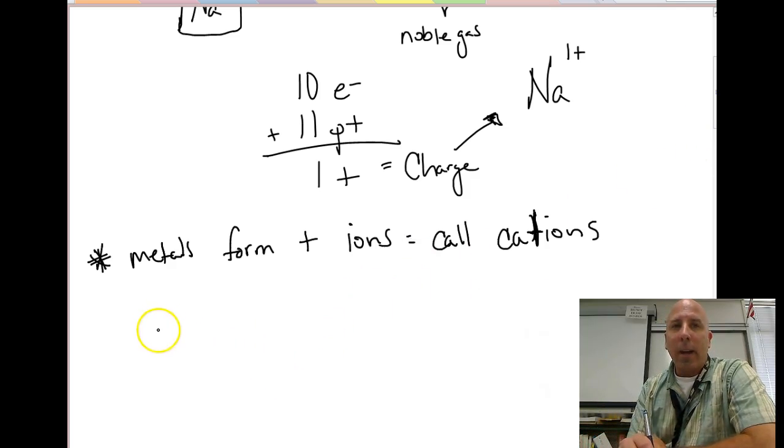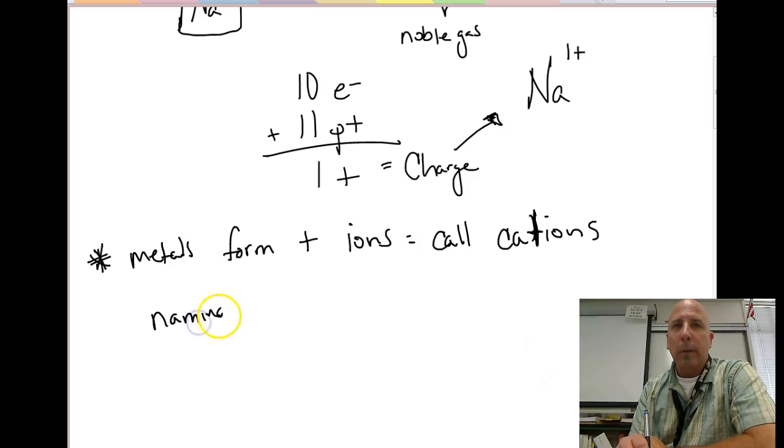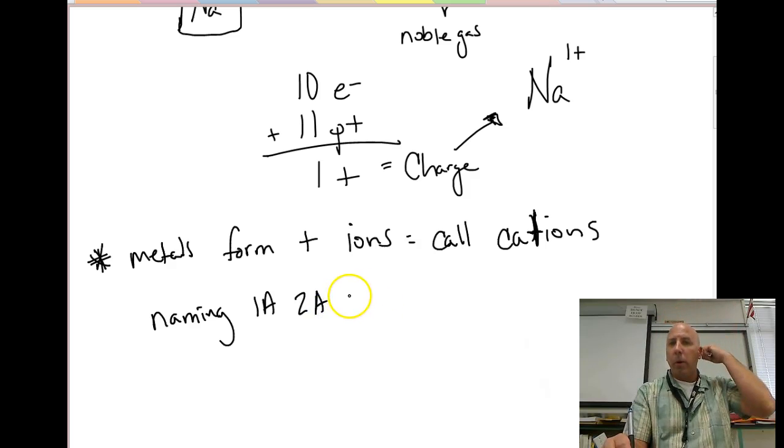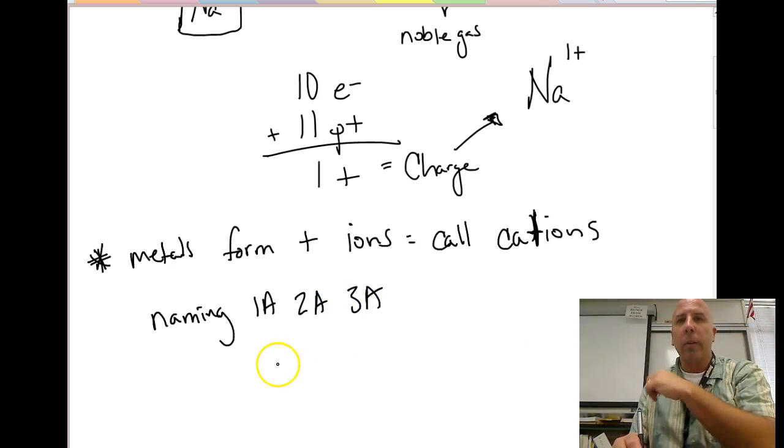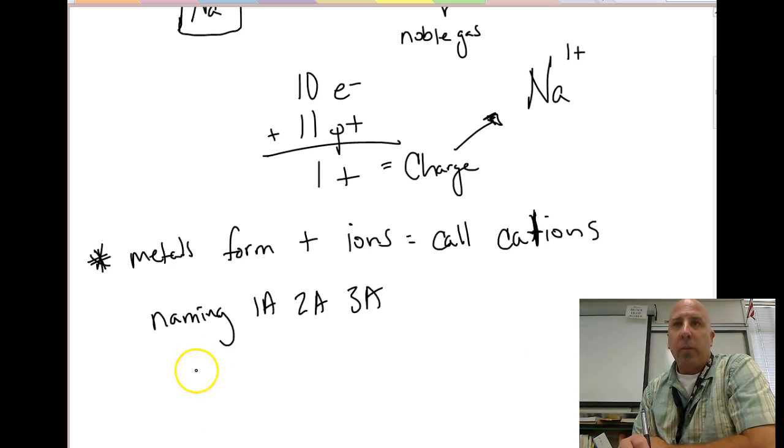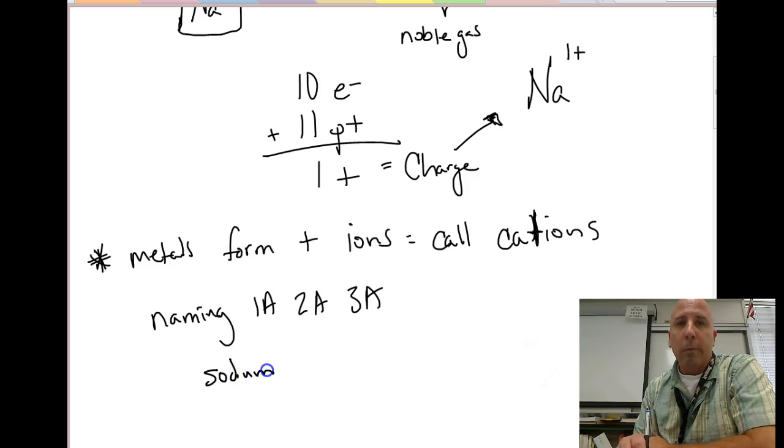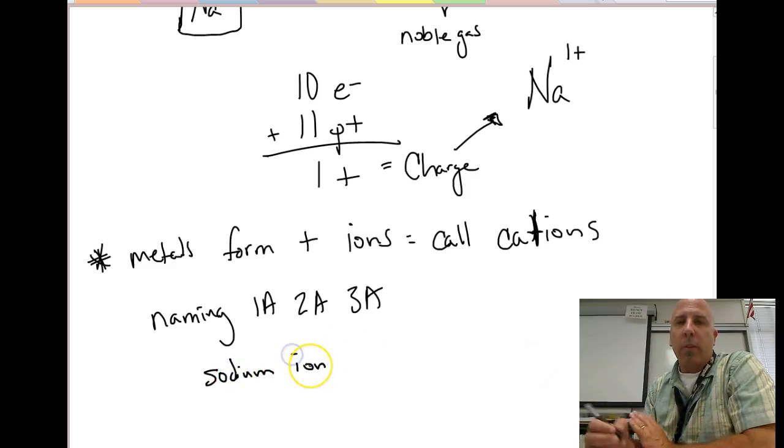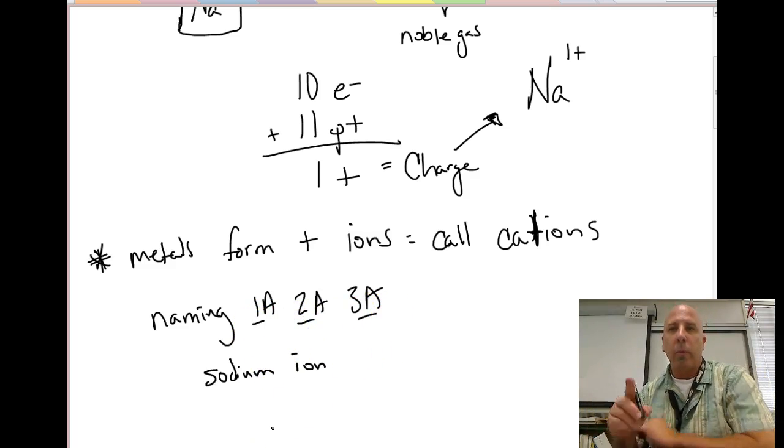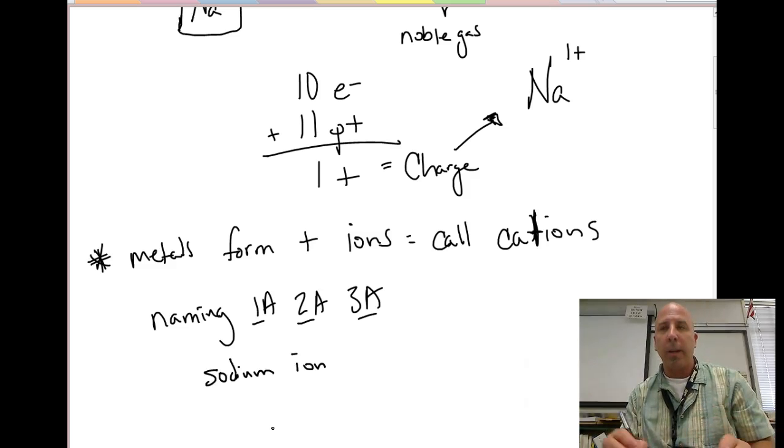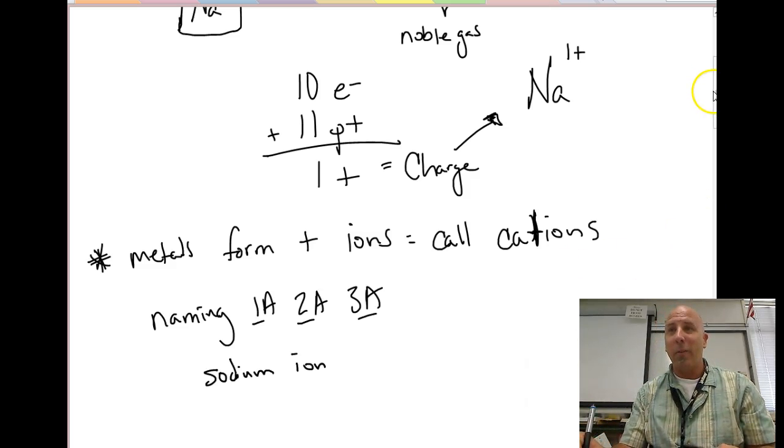When we name cations in group 1A, in group 2A, as well as in group 3A, we just basically call it the name of the atom, for example sodium, and then we add the word ion at the end. So nothing special about naming them. Now, group 1A, group 2A, group 3A is going to exclude the transition metals. We're not talking about the transition metals. That will be a different talk on a different day.